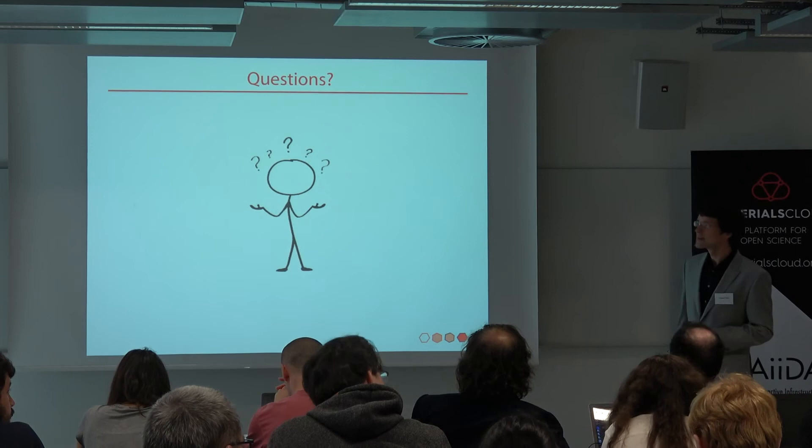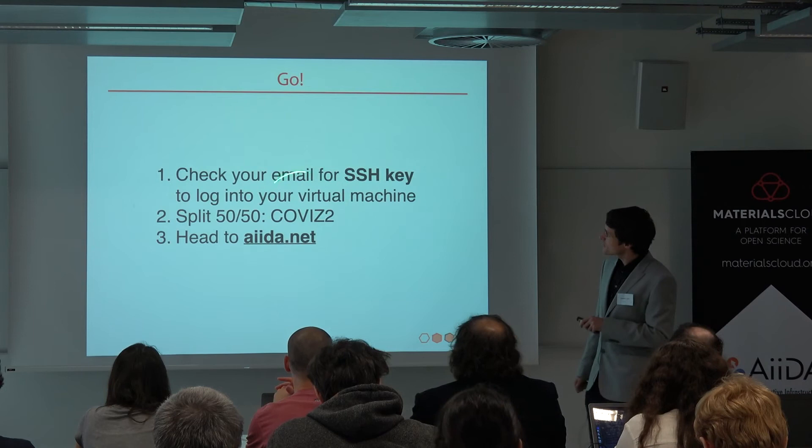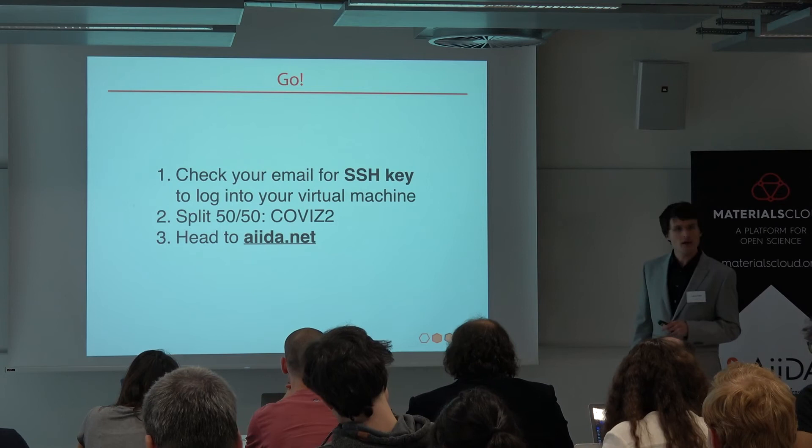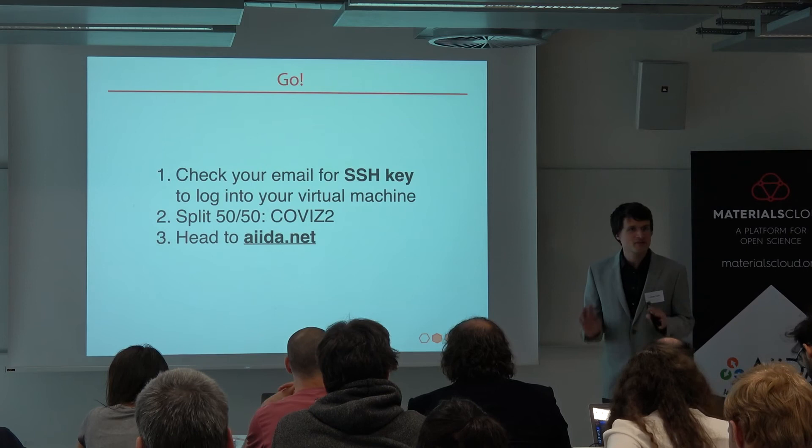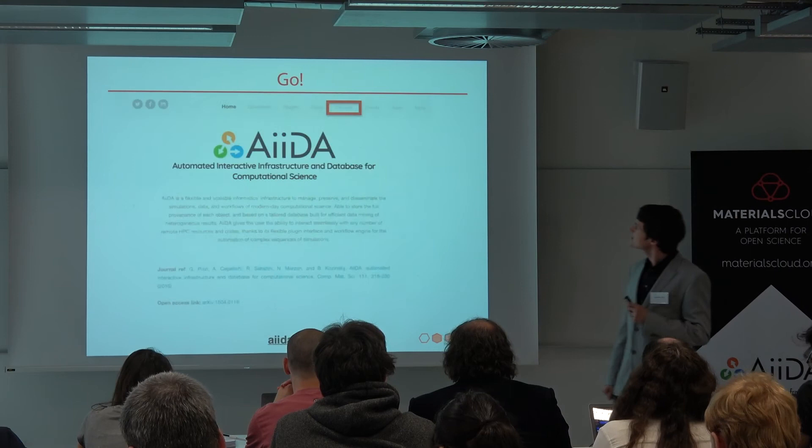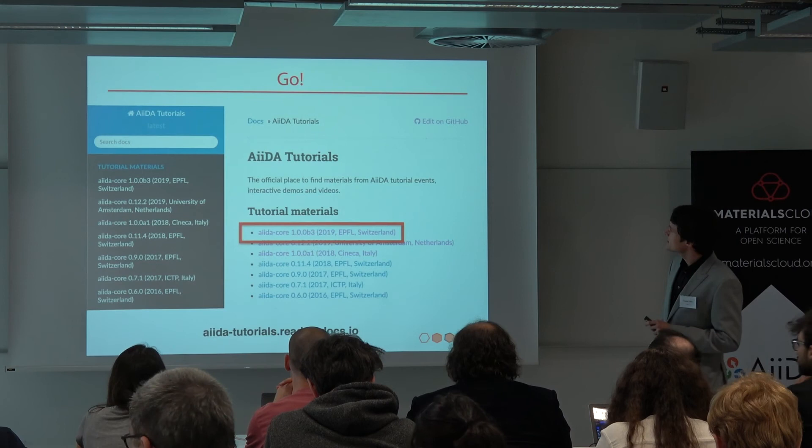To get started: first, check your email — you will receive an SSH key via email that allows you to log into your virtual machine. Then split 50-50 between this room and the other room. Finally, go to aiida.net, click on the Tutorials button, go to the AIDA Tutorials page, and click on the latest one — the AIDA Core 1.0.0 Beta 3 tutorial.